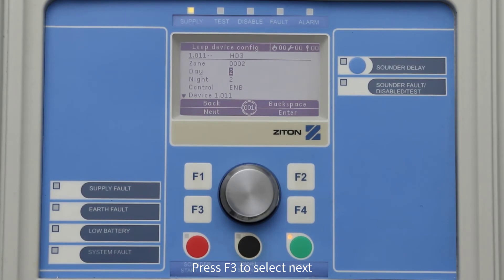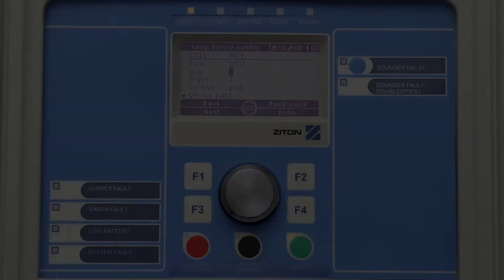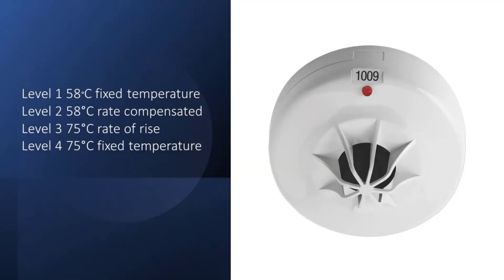This moves the cursor to the daytime sensitivity setting. For a heat detector there are four possible settings: number one will set the device to 58 degrees fixed temperature; number two will set the device to 58 degrees rate compensated; number three will set the device to 75 degrees rate of rise; number four is an additional option.